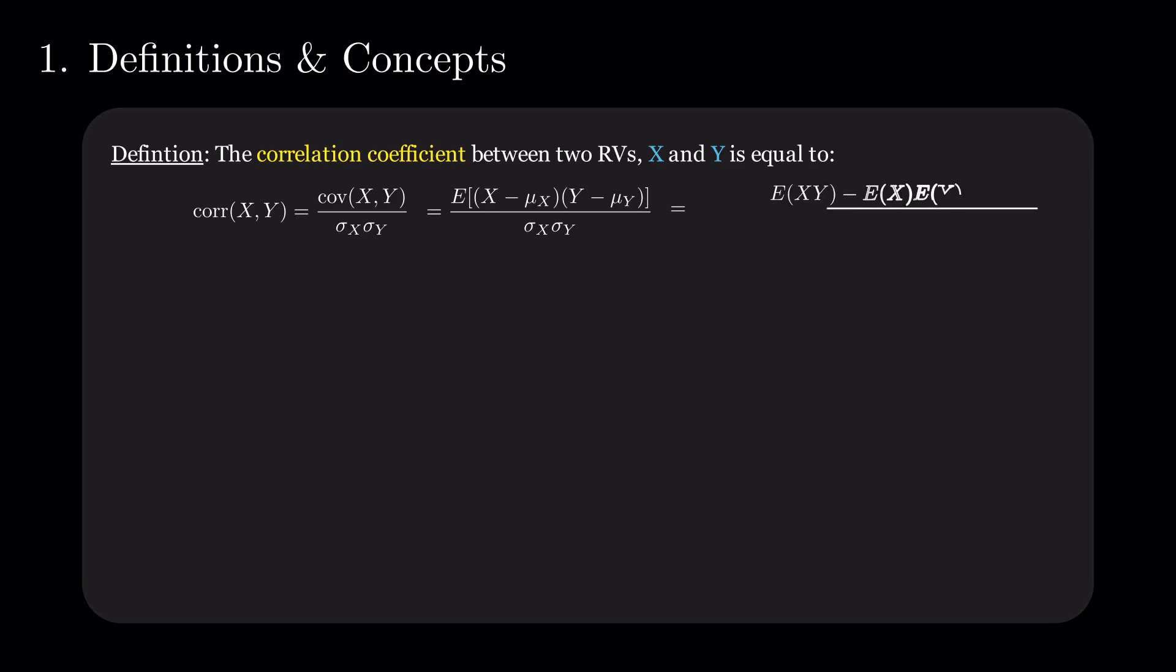Expand the product, apply the linearity of the expectation in the numerator, write the standard deviations as the squared root of the formula for variance, and you will get an alternative equation for the correlation coefficient.